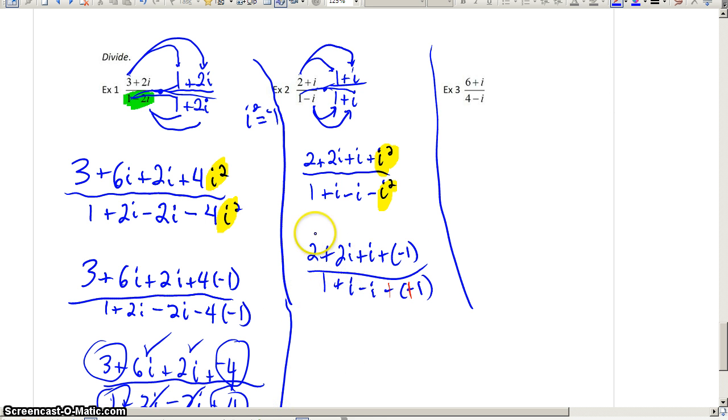Up on top, a 2 and a negative 1 add up to 1. A 2i and a 1i add up to 3i. Down below, we have a 1 and a positive 1 that would add up to 2. But, the i and the negative i completely cancel out, leaving us with 1 plus 3i over 2.